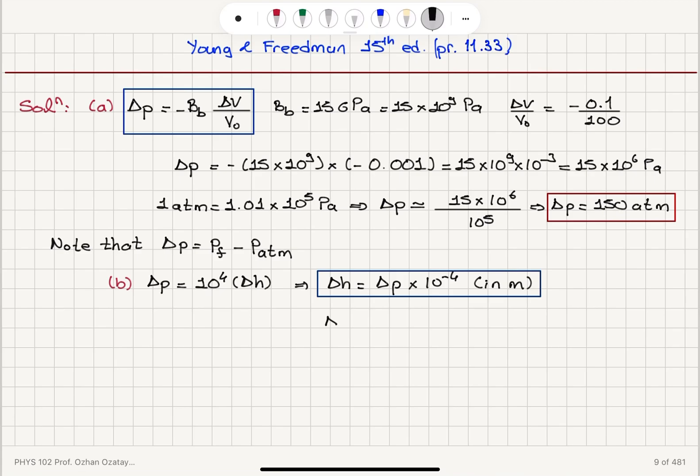Now, for delta P of 15 times 10 to 6 Pa, remember that is the pressure that gives us this compression, times 10 to minus 4, we obtain a delta H of 1500 meters.